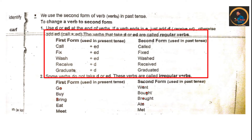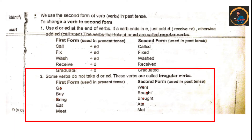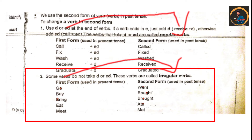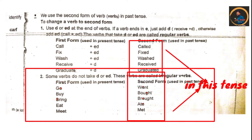Then we have some verbs that don't take D or ED. These verbs are called irregular verbs. For example: go — second form is went; buy — bought; bring — brought; eat — ate; meet — met. I think it's quite easy.